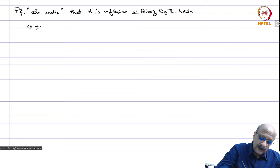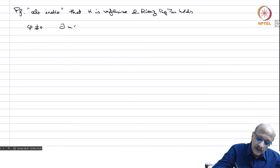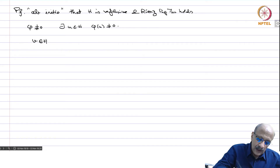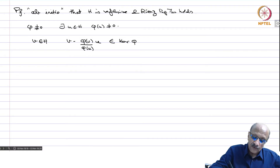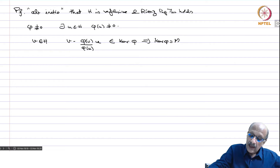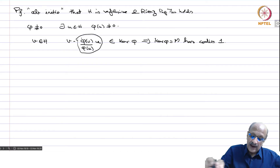For the direct proof, assume phi is not identically zero; if it is zero, the zero vector works. So there exists u in H such that phi(u) is not zero. For any v in H, consider v minus (phi(v)/phi(u)) times u. Taking phi of this expression gives phi(v) minus phi(v), which is zero. So this element belongs to the kernel of phi. Therefore, the kernel of phi, call it M, has co-dimension one — its complement is spanned by a vector u where phi(u) is not zero.